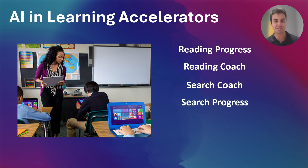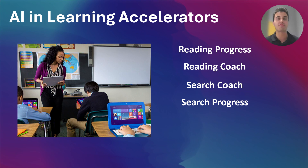With Search Progress, AI is used to help teachers track the development of information literacy skills among their students by creating a dashboard that shows their search activity and behaviors over time. AI can also help identify areas for improvement, such as refining search terms, narrowing or broadening the scope, and using advanced filters. This can help teachers provide differentiated instruction and feedback to students with different learning needs and goals.